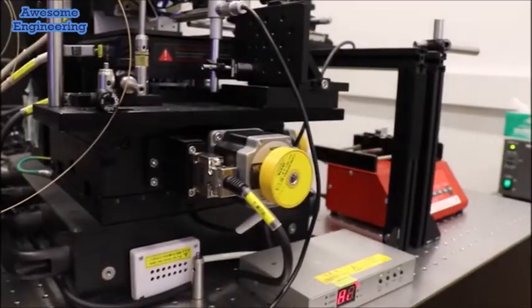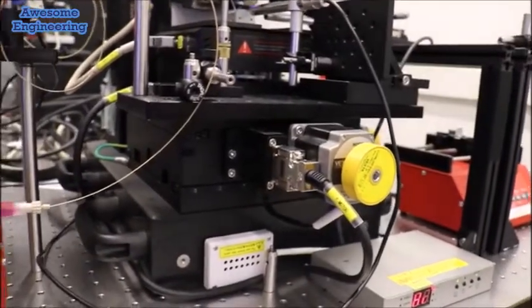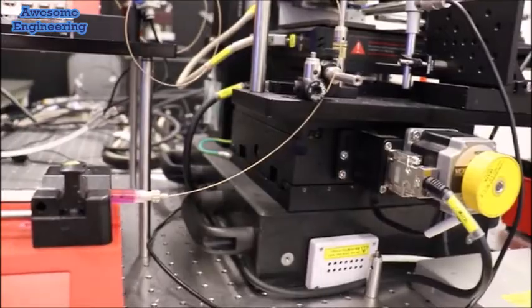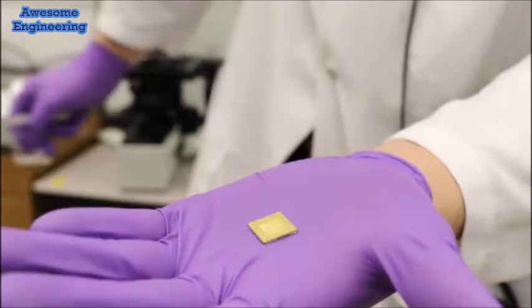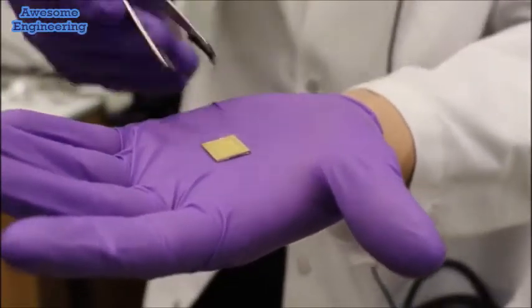Researchers at the CUNY Advanced Science Research Center are using a technique called beam-pen lithography. This technique uses gold-plated polymer squares containing thousands of tiny pyramids with holes that allow light through.